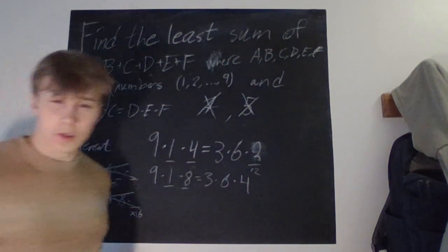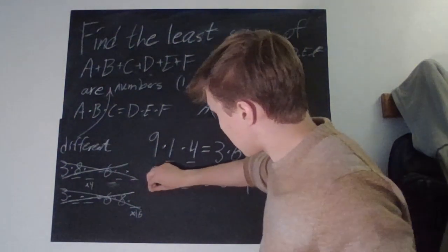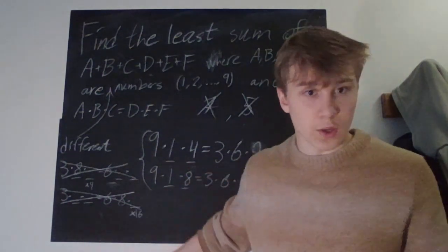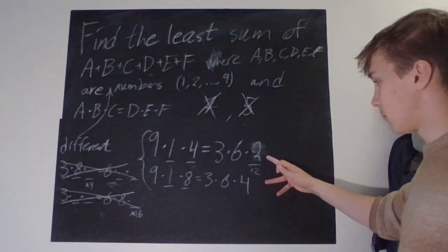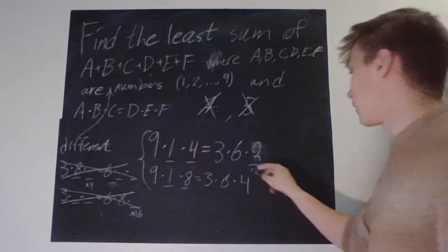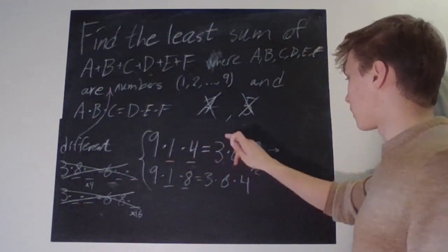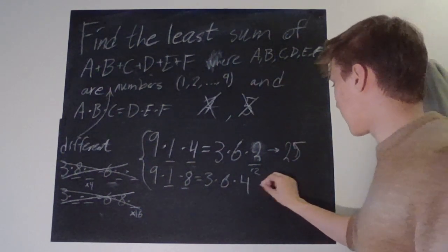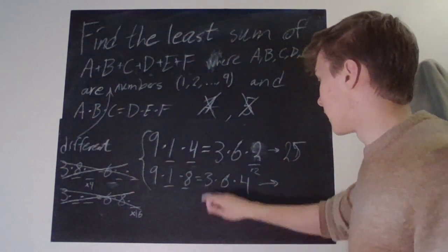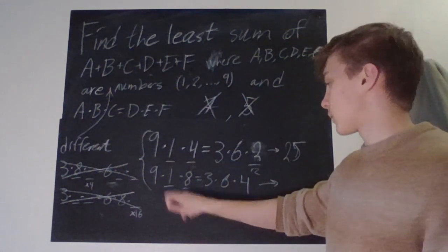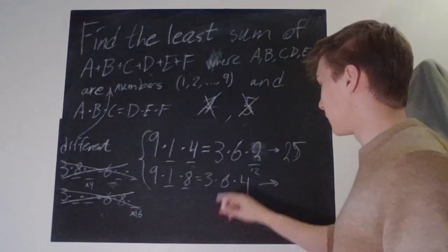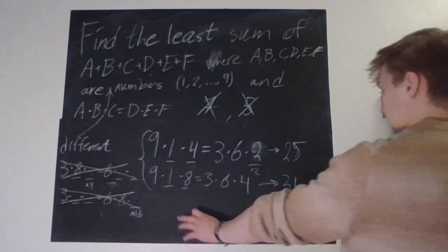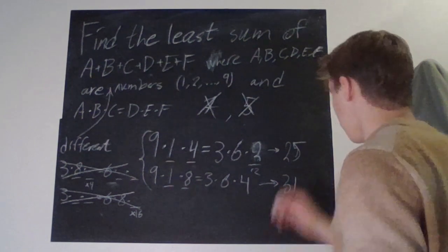So we've shown that these are all the cases where we have a nine, and where we don't have nine it doesn't work. Therefore these are all the cases possible. Adding them up: nine plus one plus four plus three plus six plus two equals 25. The other case gives nine plus one plus eight plus three plus six plus four equals 31.